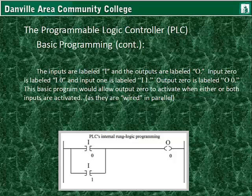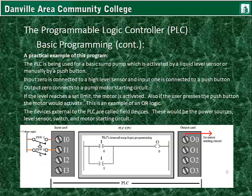This basic program would allow output 0 to activate when either or both inputs are activated, as they are wired in parallel. The wiring is actually part of the programming interface for the programmer, building a somewhat realistic ladder logic schematic, which is then converted into data sent into the PLC. We will now see a practical example of this program — the PLC being used for a basic sump pump, activated by a liquid level sensor or manually by a push button.